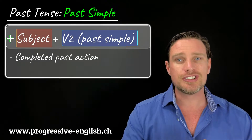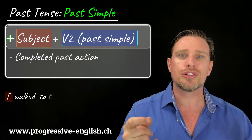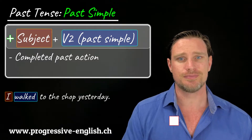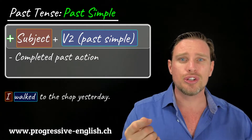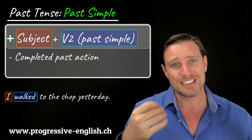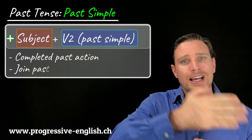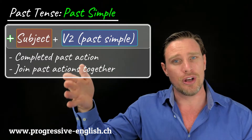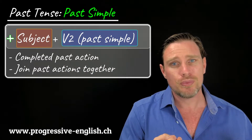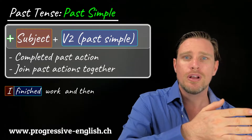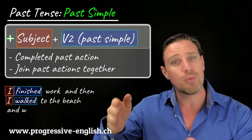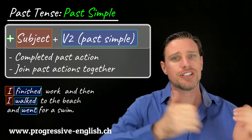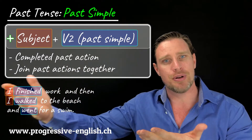An example: I walked to the beach. We can also use past simple to join past actions together in the order that they occurred. For example: I finished work, and then I walked to the beach and went for a swim — all completed past actions in the order that they happened.